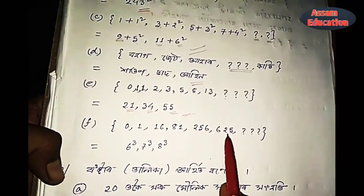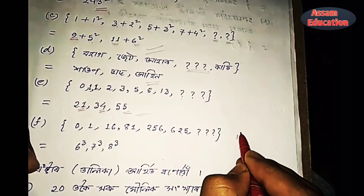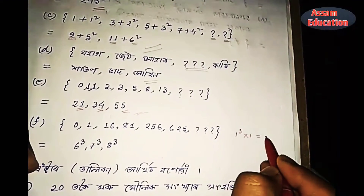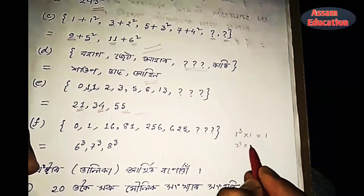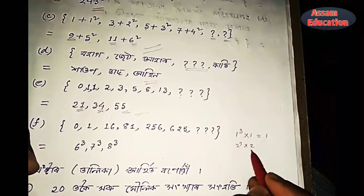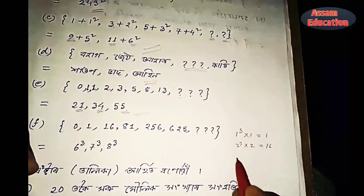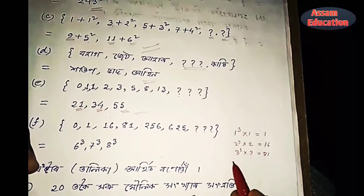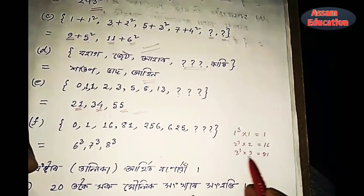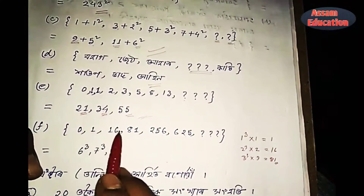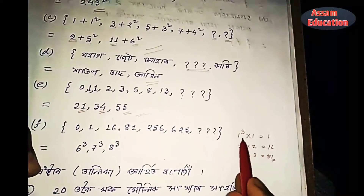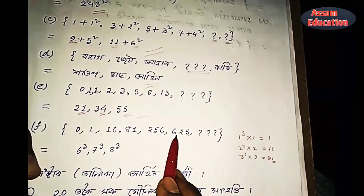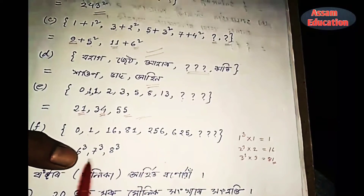256, 625. 1 cube is 1. Then 2 cube is 2, so 2 cube is 8. So 3 cube is 3, then 8 is 1. So 1 cube, 2 cube, 3 cube, 4 cube, 5 cube, 6 cube. So 1 cube is 1.